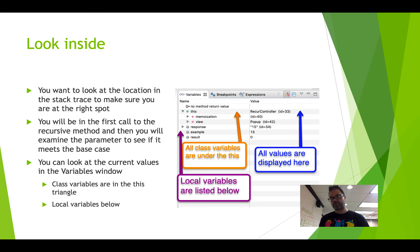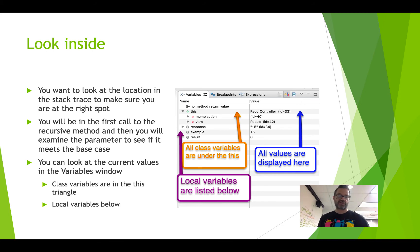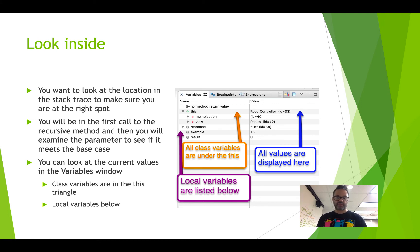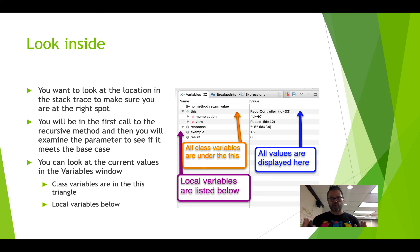We can look at all those values by looking over in the variables window. We have the class variables underneath this triangle — if we fold it down, we can see memoization and view as data members of this class. Memoization is an array and view is a pop-up instance. Then we have our local variables of response, example, and result. The response value is the string 15, the example value has the integer 15, and result is defaulted at 0. All class variables appear under the 'this' triangle, local variables are below, and all values are in the value column on the right.